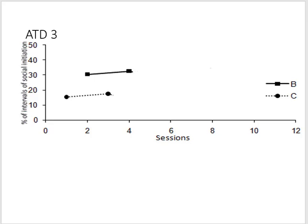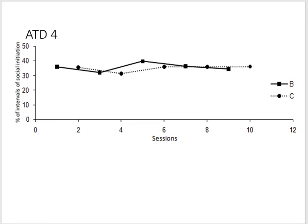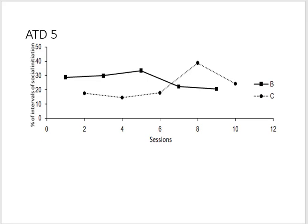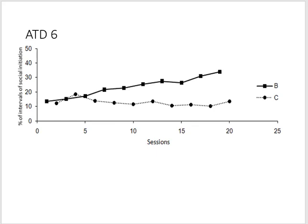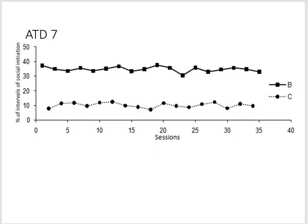Using a scale of one being weak to seven being strong, rate the experimental control for each of the seven alternating treatments design graphs presented. Write or rate it now for alternating treatments design graphs one through seven.